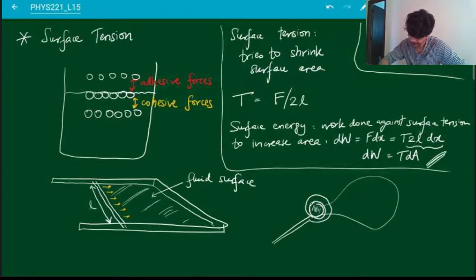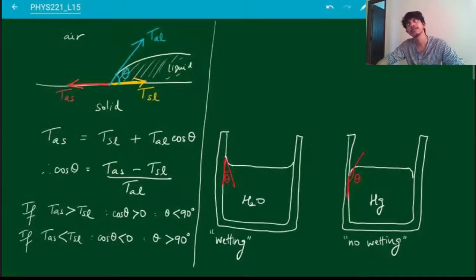This formula that we've written over here for the surface energy becomes very important from an energetics point of view, but also if you're interested in looking at the thermodynamics of thin films. Surface tension also explains the shapes of bubbles and drops as we discussed. You can also use this to find out what is the pressure inside bubbles and droplets. All right, so this is all that I wanted to discuss with regards to fluid dynamics. In the next class I think we will discuss in detail rigid body motion. Okay, thank you.